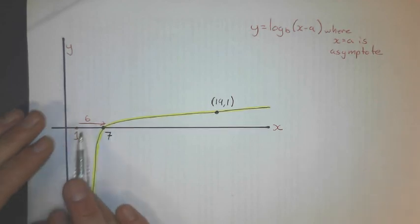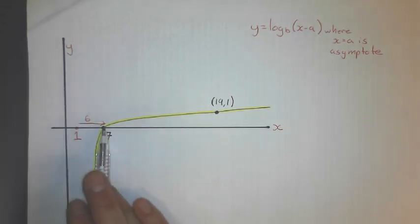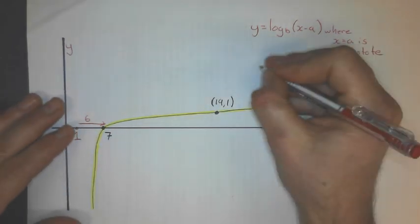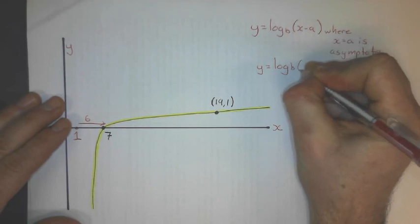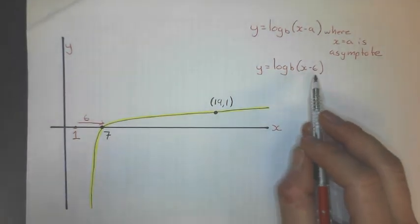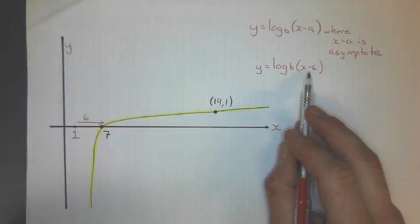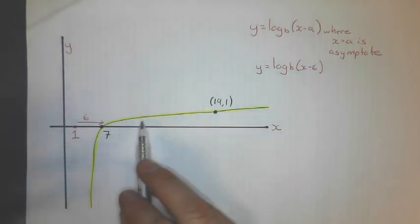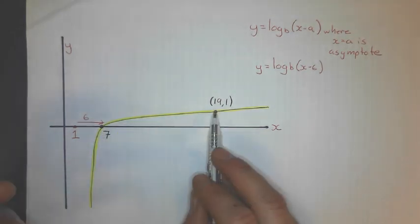where x equals a is the asymptote. Okay, now this is, it's shifted over 6 units. Remember, because the general equation goes through 1, not 0. So this is shifted over 6 units. So y equals log b, x minus 6. That's as far, that's what I know so far. It's been shifted 6 units to the right. Next, what I'm going to do is plug some point in there. And this point isn't going to get me anywhere. We found that out from my previous example. So I'll use the other point that's given, which is 19 and 1.